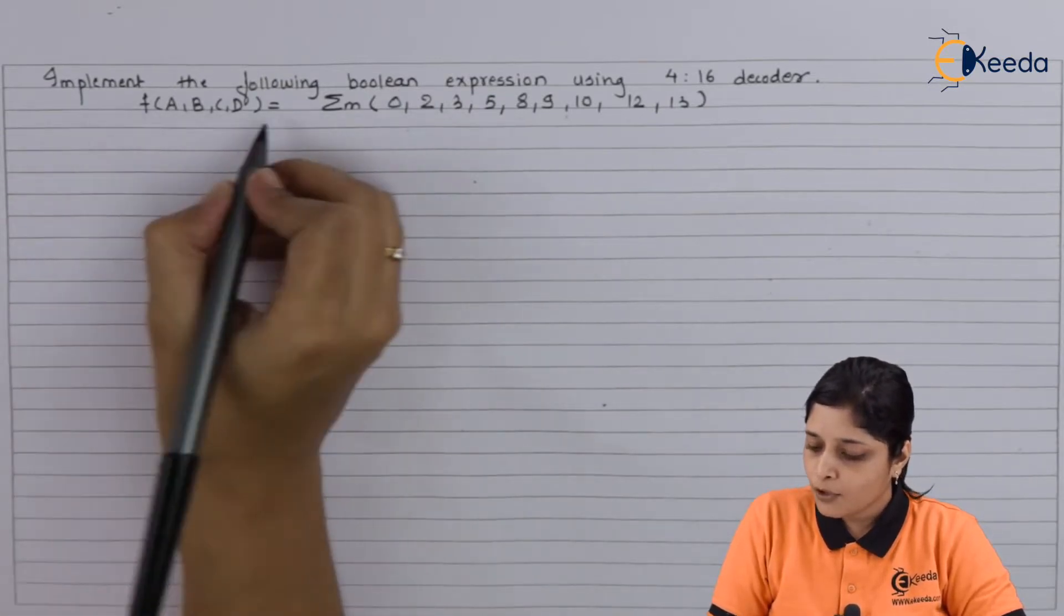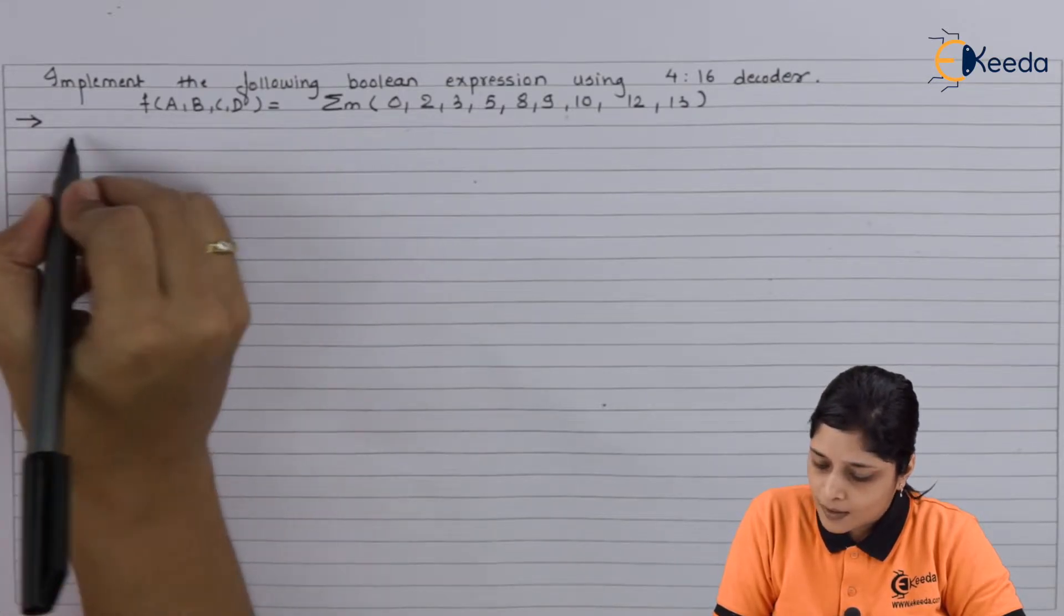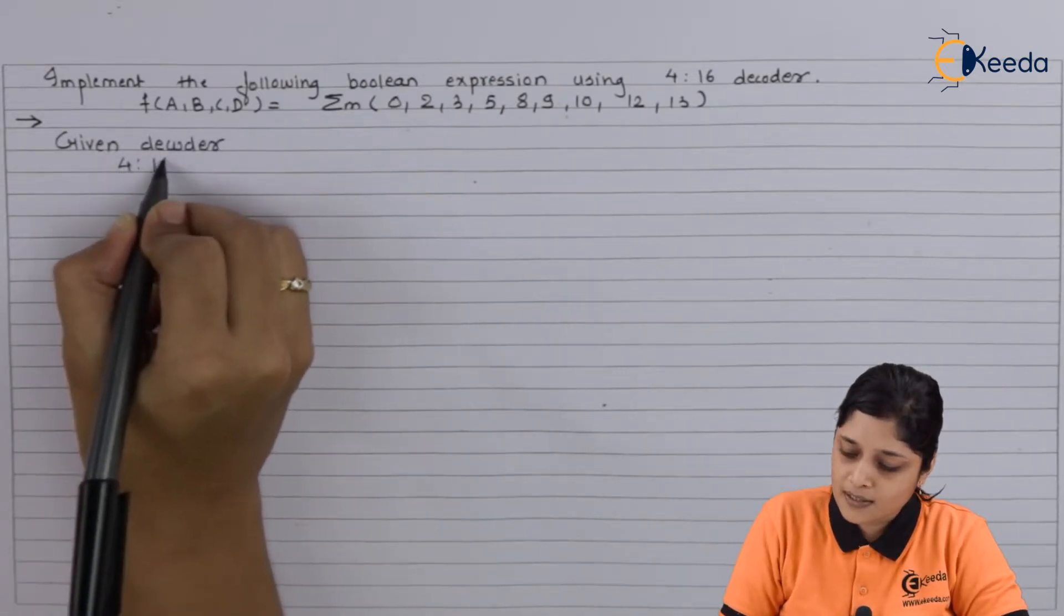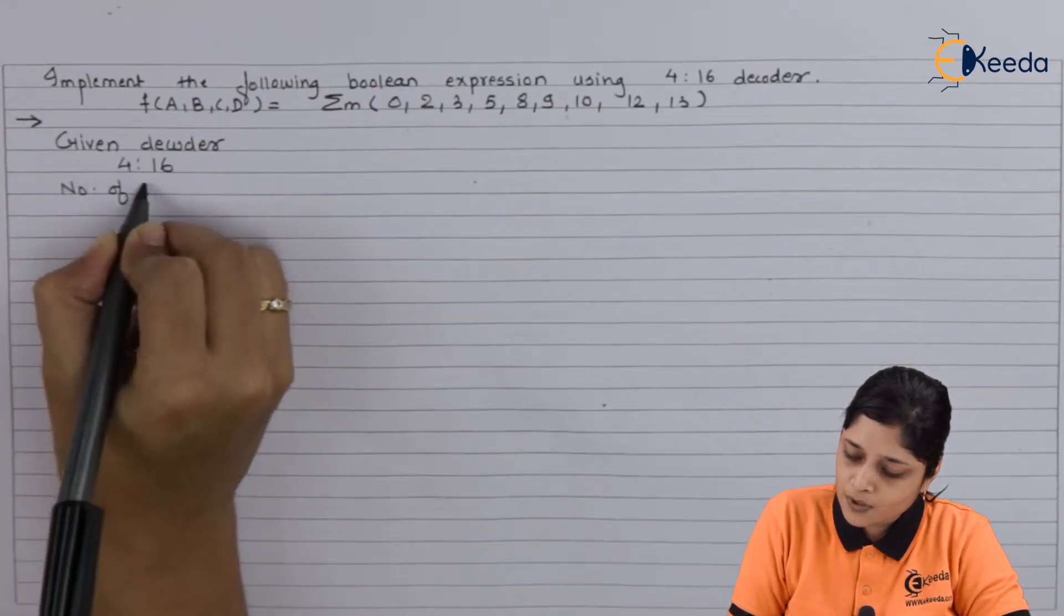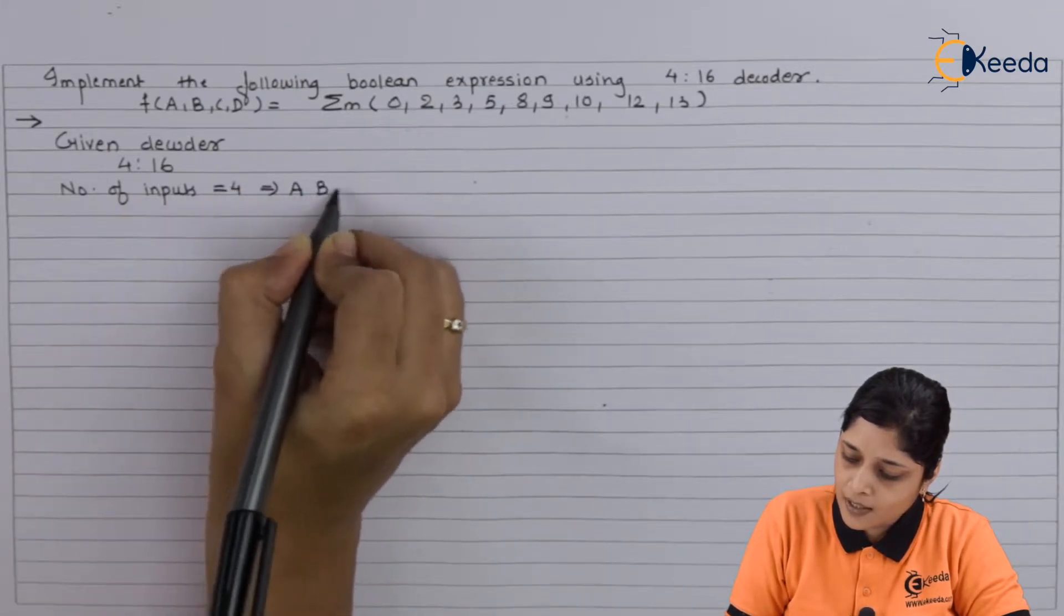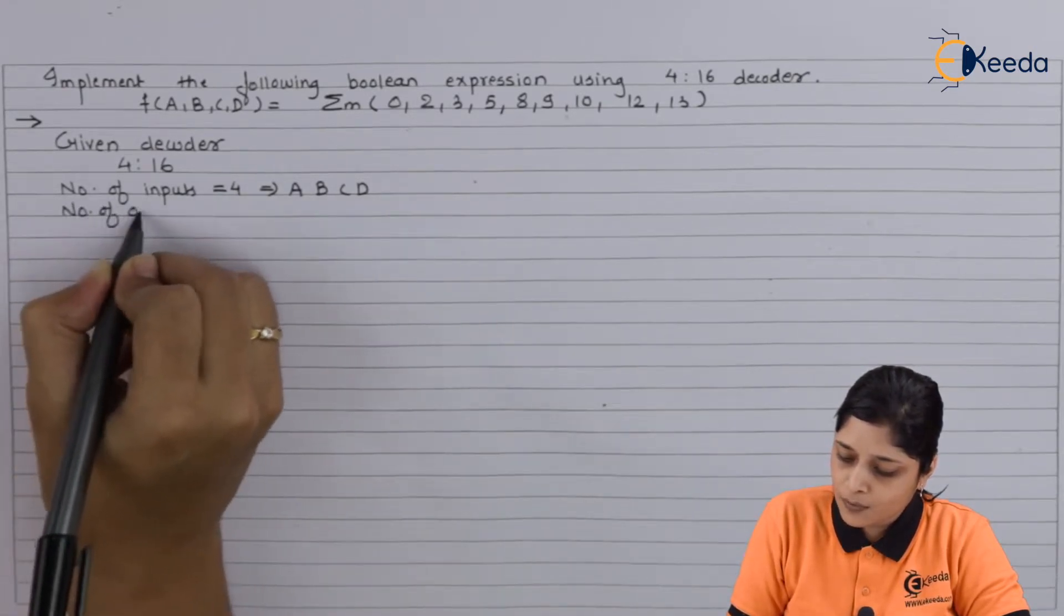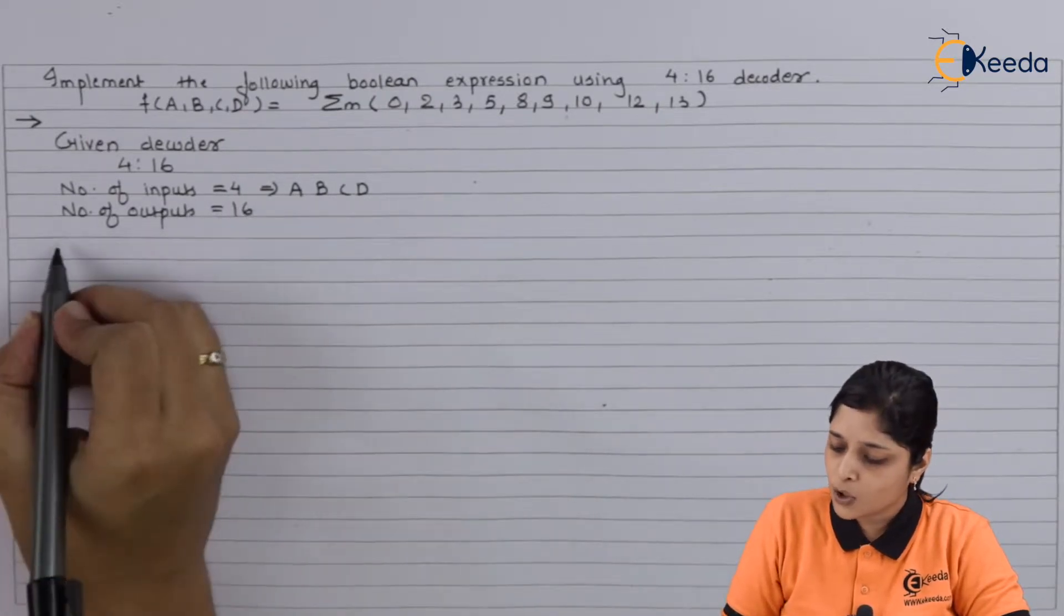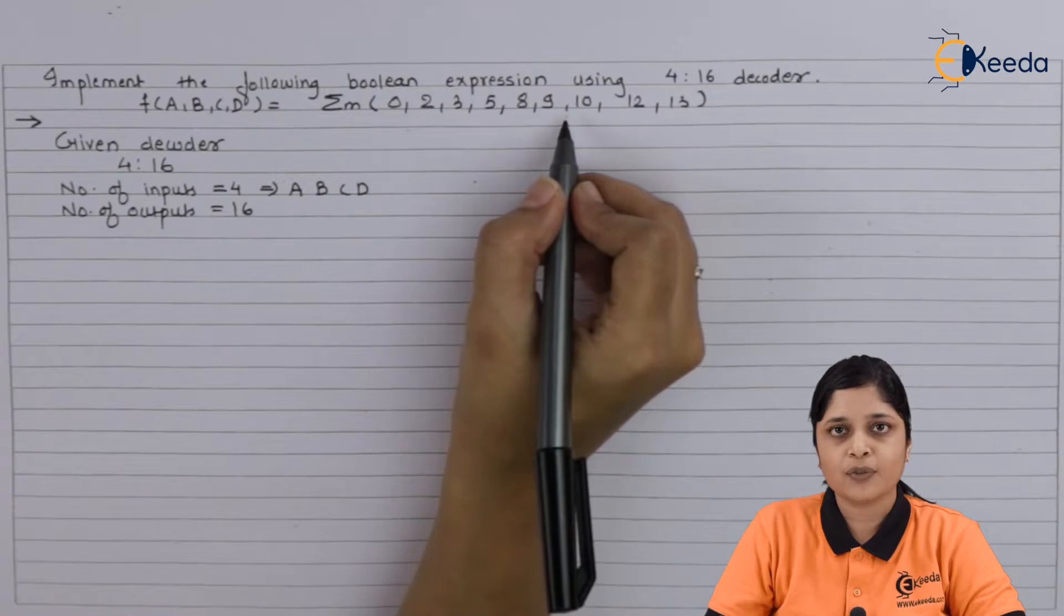So what you have to do here, you have to collect some important points. Given decoder is 4 to 16, so number of inputs equals to 4 and variables are a, b, c, and d. After that, number of outputs equals to 16. So according to the minterms present in the given expressions, you have to connect it to the OR gate and finally you will get your final answer for the given expressions.